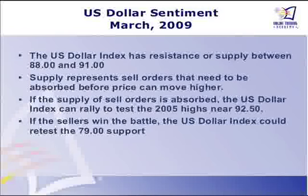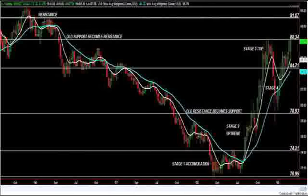So in March, when I was here, I said the dollar index has resistance or supply between the 88 and 91 level. Supply represents sell orders that need to be absorbed before price can move higher. If the supply orders are absorbed, then the dollar index could rally up to test the 2005 highs near 92.50. If the sellers win the battle, then the dollar index could retest the 79 support.